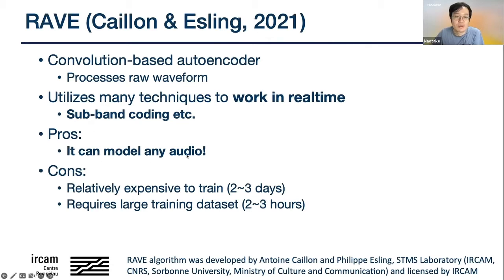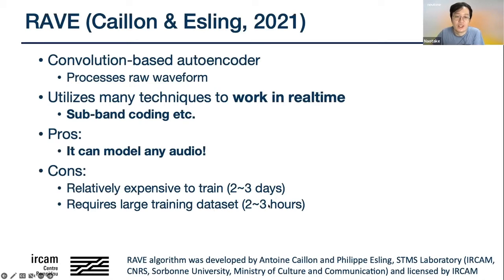The pros of RAVE are that it can model any audio — it doesn't have to be a clean performance. You can feed it an entire song and it would try to reconstruct that entire song. The cons are that it's a bit expensive to train compared to things like DDSP — it says two to three days but it might take up to five days depending on the GPU. You also have to prepare a large training dataset, at least two to three hours, though more is generally better.